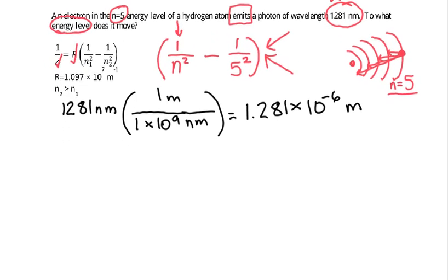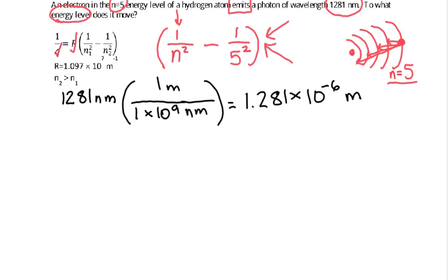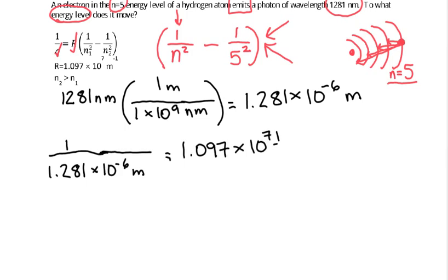Now we're going to keep going, and we're going to plug things into that Rydberg equation. So we have 1 divided by 1.281 times 10 to the minus 6th meters equals the Rydberg constant, 1.097 times 10 to the 7th inverse meters, times 1 over n squared, minus 1 over 5 squared.